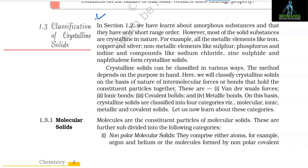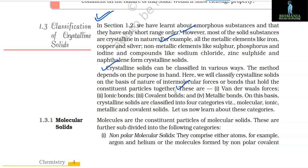1.3 Classification of Crystalline Solids. Most solid substances are crystalline in nature — for example, metallic elements like iron, copper, and silver; non-metallic elements like sulfur, phosphorus, and iodine; and compounds like sodium chloride, zinc sulfide, and naphthalene. Crystalline solids can be classified on the basis of the nature of intermolecular forces or bonds holding constituent particles together: van der Waals forces, ionic bonds, covalent bonds, and metallic bonds. On this basis, crystalline solids are classified into four categories: molecular, ionic, metallic, and covalent solids.